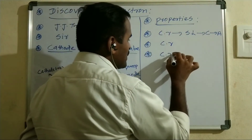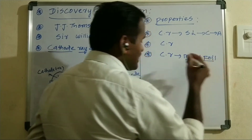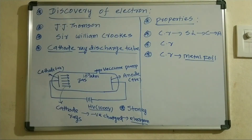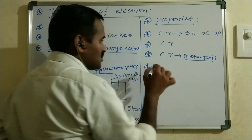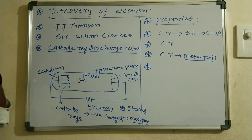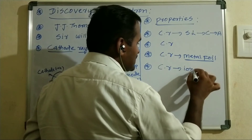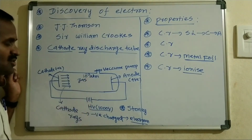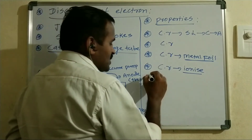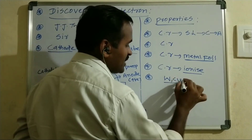Whenever a metal foil is placed in the direction of cathode rays, the metal foil gets heated. This effect is called the heating effect. This confirms that cathode rays consist of negatively charged particles. Another property is that cathode rays ionize the gas present in the discharge tube.